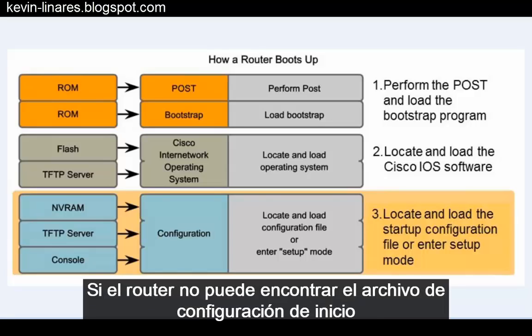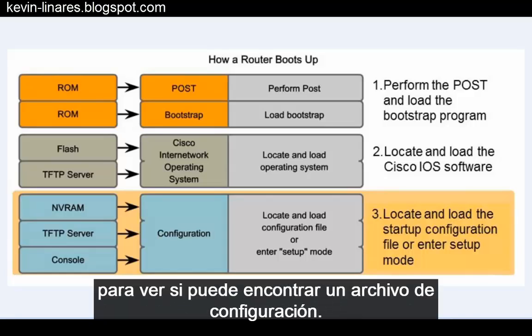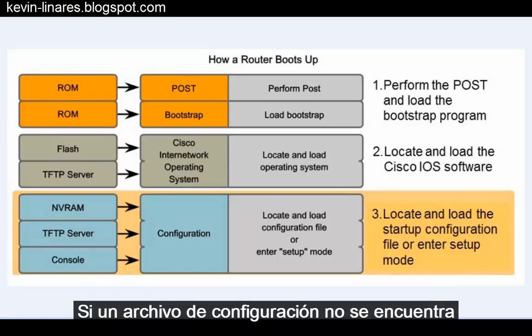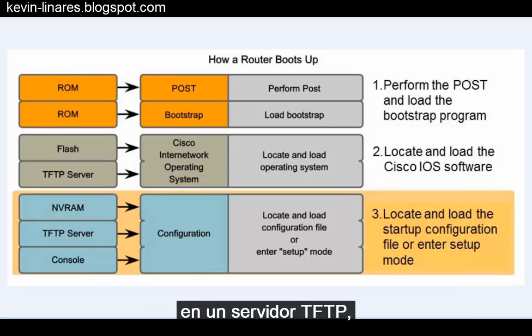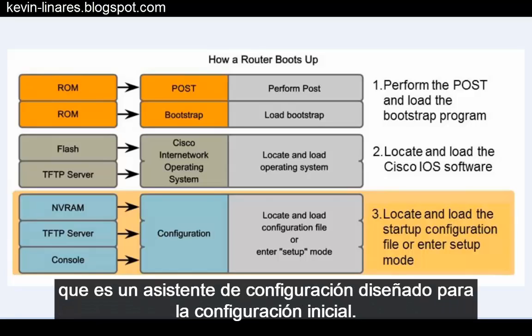If the router cannot find the startup configuration file in NVRAM memory, it will also look to a TFTP server on the network to see if it can find a configuration file. If a configuration file is not located on a TFTP server either, then the router will enter setup mode, which is a configuration wizard meant for initial setup.